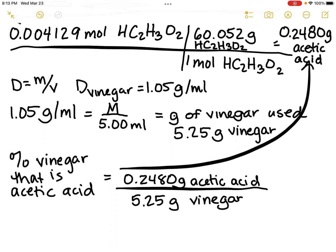0.2480 divided by 5.25 gets me 0.0472. Remember we're looking for a percentage, so multiply by 100. My vinegar's percentage based on my calculations is 4.72 percent.